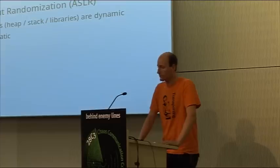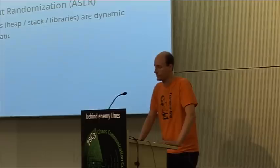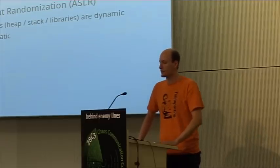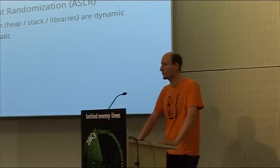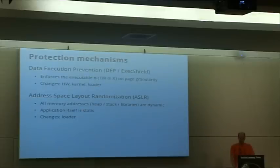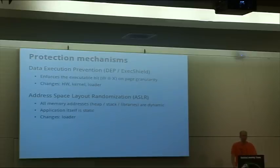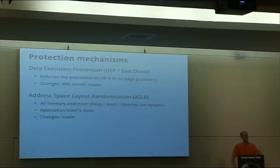The next protection mechanism is address-based layout randomization. ASLR is a probabilistic protection mechanism also enabled by default on current kernels. ASLR enforces that all memory addresses on the heap, on the stack, and for all libraries are dynamically shuffled and randomized. This means we can no longer redirect the return instruction pointer to the beginning of a buffer because we have no idea where that buffer is located in memory.